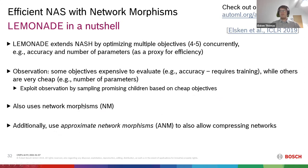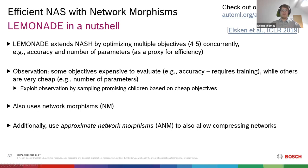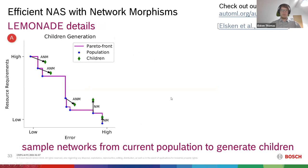We again use network morphisms to avoid training from scratch. One problem is that standard network morphisms only increase network size — you add layers and filters — which is counterproductive when also looking for small, efficient architectures. So in this paper we propose approximate network morphisms that also allow shrinking neural networks. You can't guarantee performance stays exactly the same, but it roughly stays the same — making this much more suitable for the multi-objective use case. There's also a blog post linked with more details.